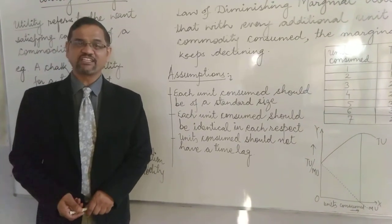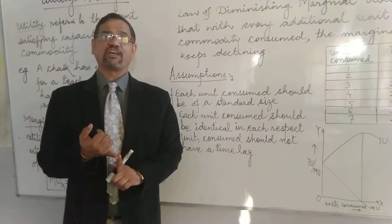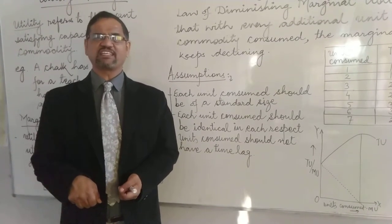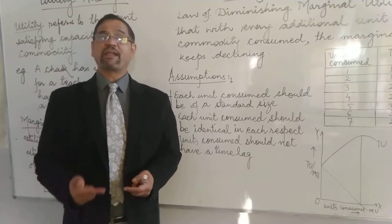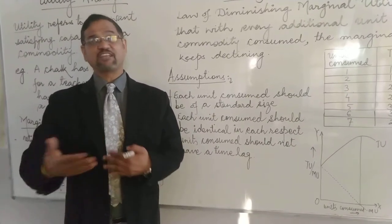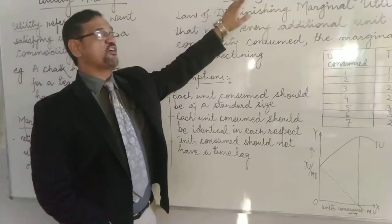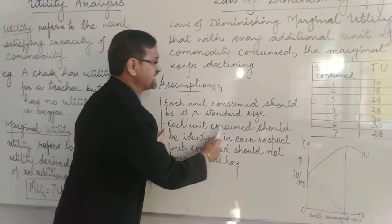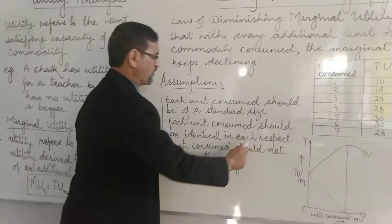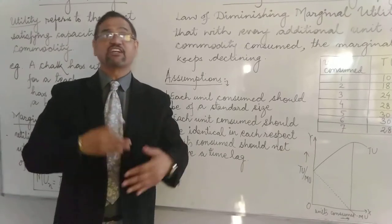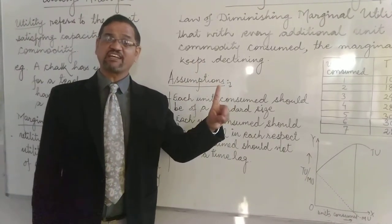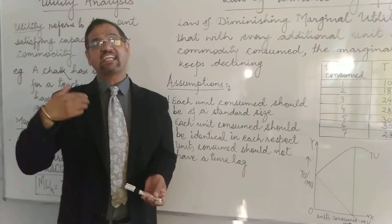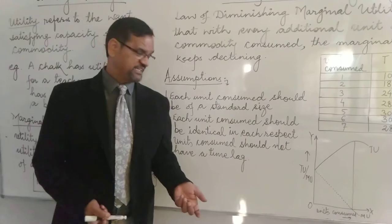The second assumption is that each unit consumed should be identical in all respects. Suppose the first chapati is a plain chapati and the second is a paratha — the second will give more satisfaction, which is a violation of the law. Therefore this law holds good only when each unit consumed is identical: first is chapati, second is also chapati, third is also chapati. Only then will satisfaction go down and eventually become negative if consumed beyond a limit.